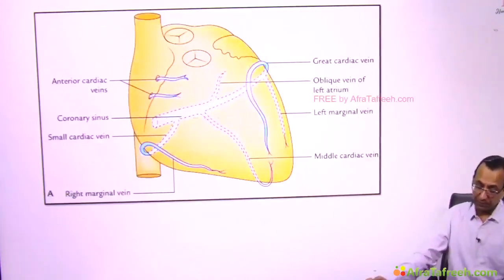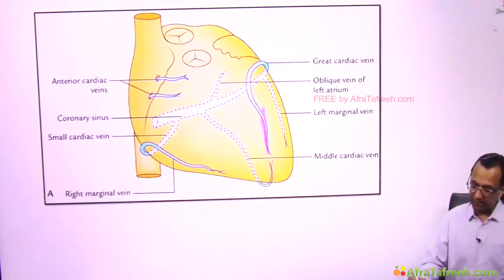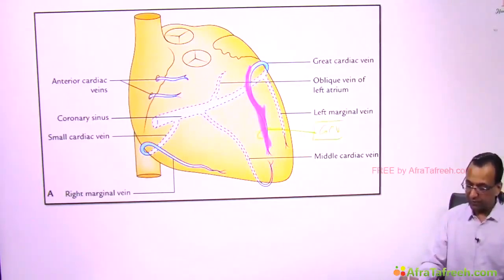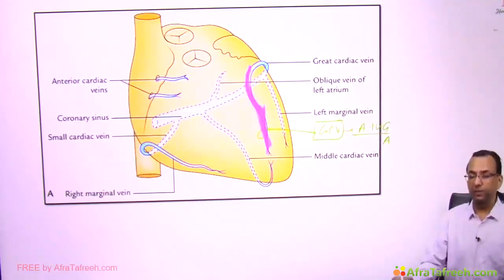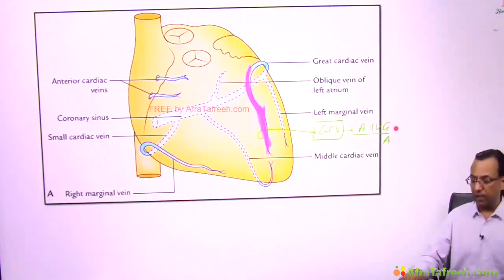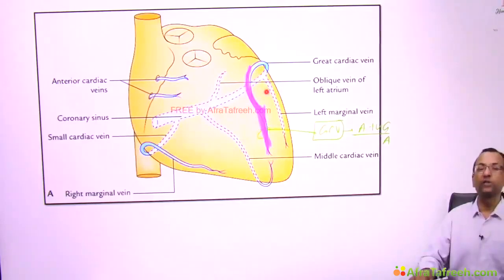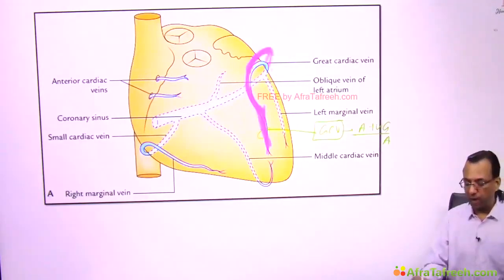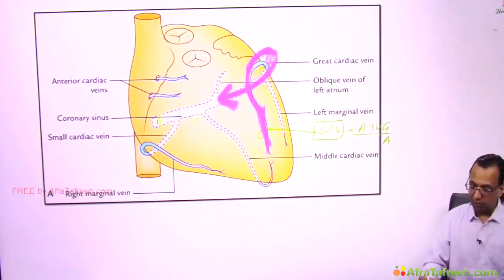The great cardiac vein runs in the AIVG (anterior interventricular groove) alongside the AIVA (anterior interventricular artery), anteriorly on the heart. This great cardiac vein then goes circumferentially around the heart, heading behind it to drain into the left end of the coronary sinus.